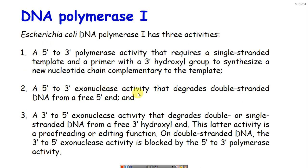DNA polymerase I also has 5' to 3' exonuclease activity, which helps in degradation of nucleotides at the 5' end while moving along the strand during nick translation. Additionally, it has 3' to 5' exonuclease activity that degrades double- or single-stranded DNA from its free 3' hydroxyl end.